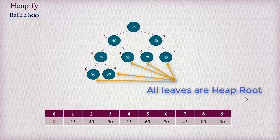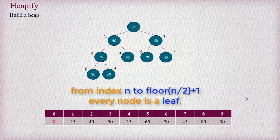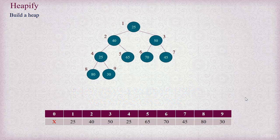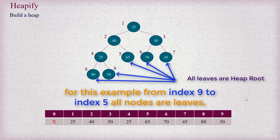We can find leaves starting from index n divided by 2 plus 1 for any almost complete binary tree. For this example, n is 9, the total number of elements. n divided by 2 is 4.5, and taking the floor value, that means 4 plus 1 is 5. So n by 2 plus 1 is 5, meaning all nodes from index 5 onwards are leaves and are trivially heaps.